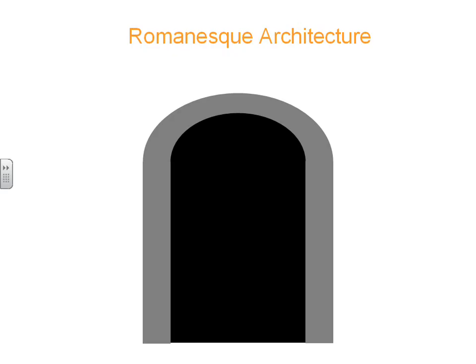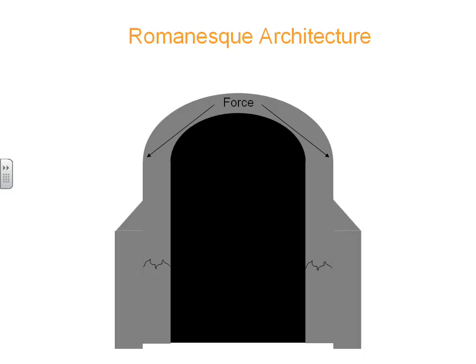Romanesque architecture literally means Roman-like architecture. One of the reasons why it's called that is it has these rounded arches. So let's say we take this Roman arch and we want to build a really tall church — we've got a problem here, because the force is pushing out. That's going to weaken the outside walls, so we're going to strengthen those outside walls by putting in buttresses, and that will take the weakness out.